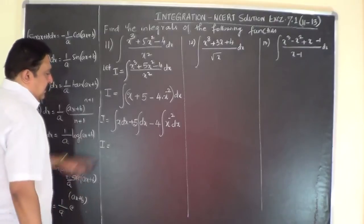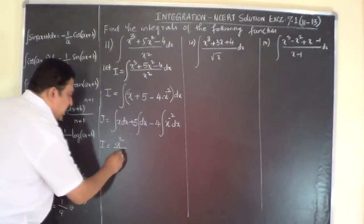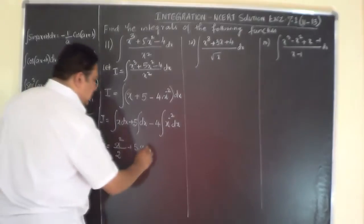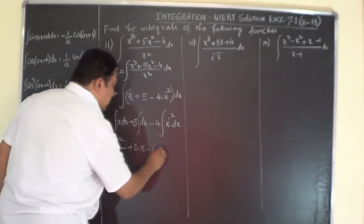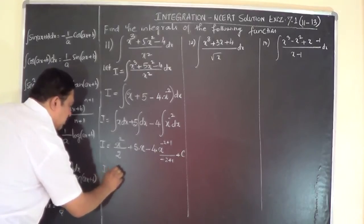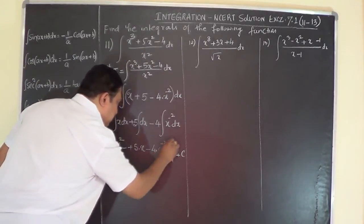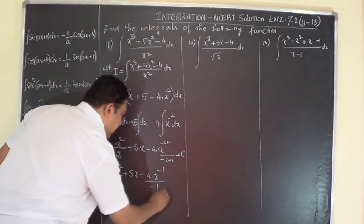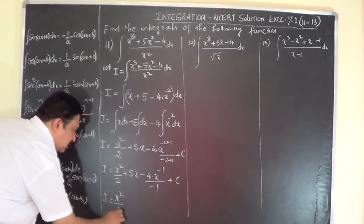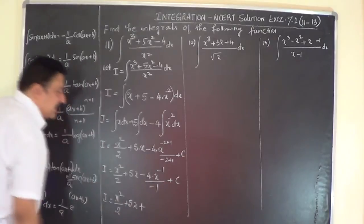Now integrate: the integral of x dx gives x to the power of 1+1, that is x² divided by 2. Plus 5 times the integral of dx, which is x. Minus 4 times the integral of x^(−2) dx, which gives x^(−2+1) divided by (−2+1), plus the constant of integration. So I equals x²/2 + 5x. Here, minus 4 times x^(−1) divided by −1 — minus over minus is plus.